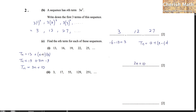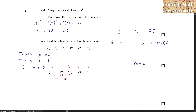Now we come to part C, number 2. We're going to find the nth term. The first term has value 3, the second term is 17, the third term is 55, and so on. We're going to find what the first difference between the terms is. That produces 14, and the next one is 38, and so on for the following terms.